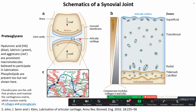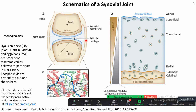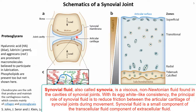In a synovial joint, two bones come together but are separated by cartilage. The superficial layer of the cartilage has proteoglycans — for example hyaluronic acid, lubricin, aggrecan, and several types of phospholipids. These macromolecules form the top layer of the cartilage and provide lubrication. There is also a synovial membrane and inside that is synovial fluid.